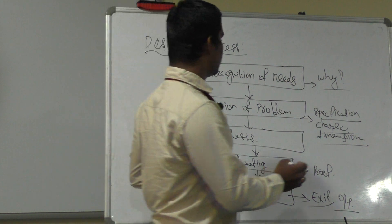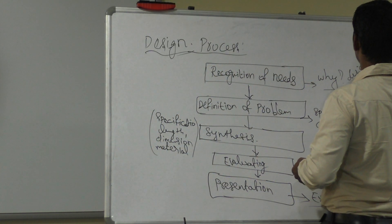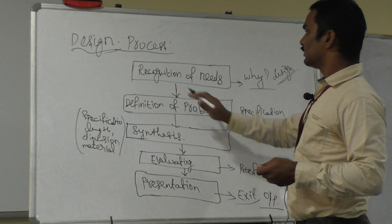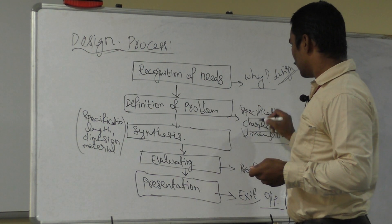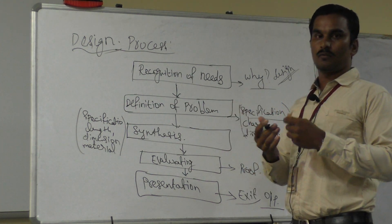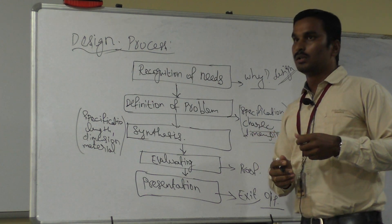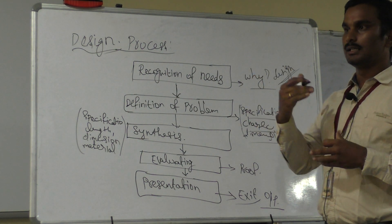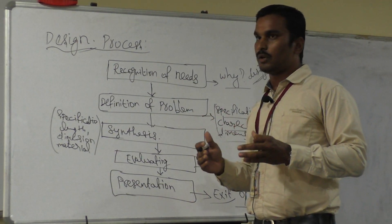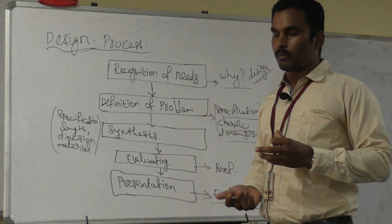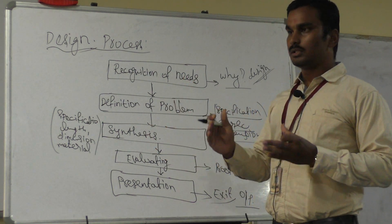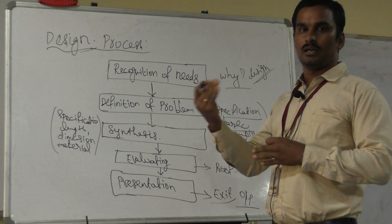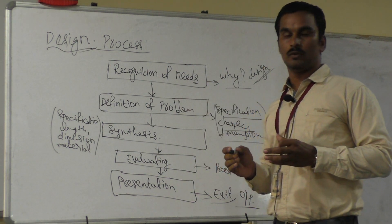Why do we design this product? It is very important. If you are facing any problem, we need to design this product. Before the existing product, they had a lot of problems. For example, we were using window AC, but nowadays we are using split AC. Why did we change from window AC to split AC? Because window AC had a lot of problems — a lot of power consumption and area occupying. So we converted to split AC, which is very simple, compact, and high performance.